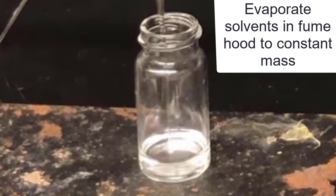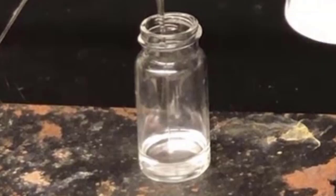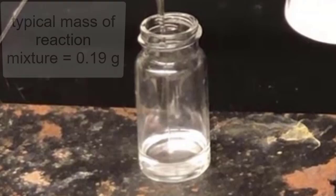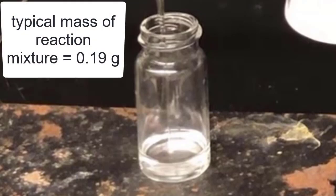The products in today's experiment, the alcohols, are very high boiling and there's no risk that they're going to evaporate. What we're getting rid of here is the ether and the tetrahydrofuran. A typical mass for reaction mixture in this experiment is 0.19 grams.